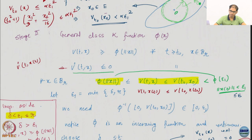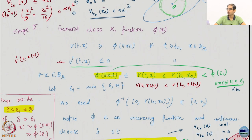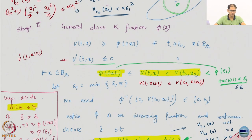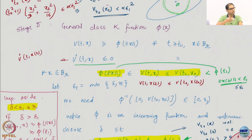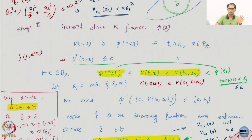Now what do I want? Earlier I wanted α·ε₁² on the right-hand side; now I just say I have on the right-hand side less than φ(ε₁) — I just use this function itself. So I have φ(ε₁). These functions φ have beautiful properties: they are 0 at 0, they are continuous, they are strictly increasing, they are monotone.